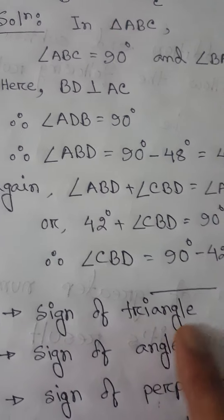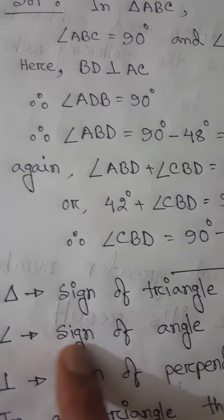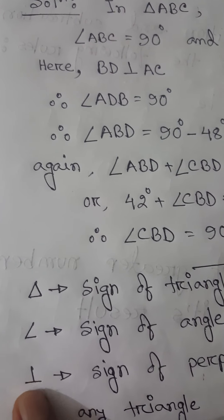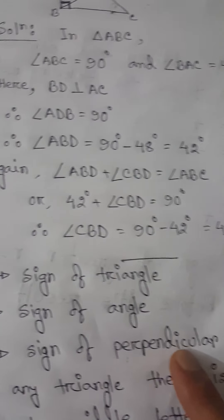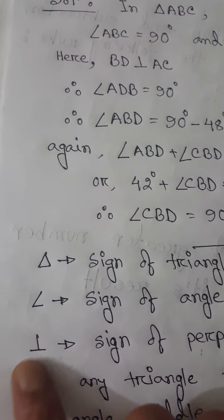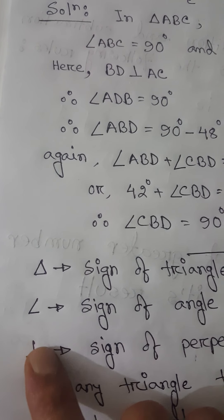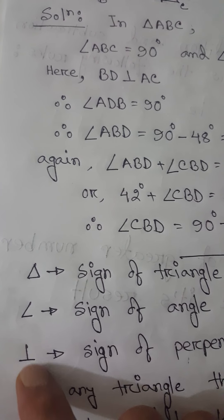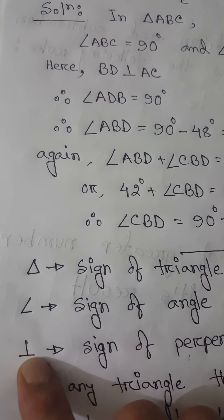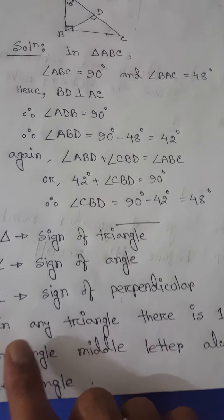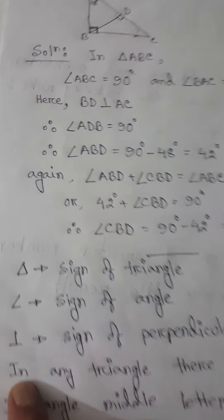The first basic is this sign — this sign always represents a triangle. This sign always represents an angle, and this sign always represents perpendicular.